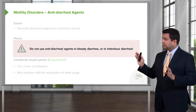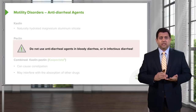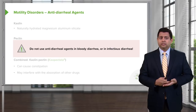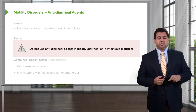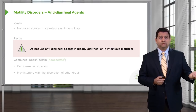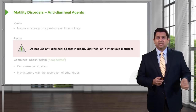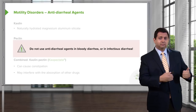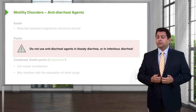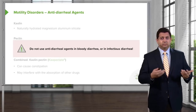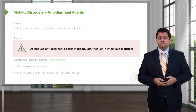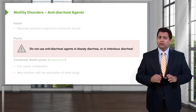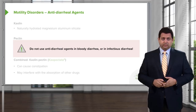An important point: do not use anti-diarrheal agents in patients who have bloody diarrhea or infectious diarrhea. In those cases, diarrhea is actually cathartic in the truest sense — you're getting rid of the infectious agent, and the diarrhea is a protective mechanism. If you inhibit that protective mechanism, you may make the person much sicker. We'll cover this in more detail in the GI systems lecture, but it's important to flag it now.